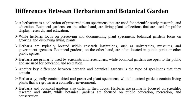Herbaria are typically located within research institutions such as universities, museums, and government agencies, while botanical gardens are often located in public parks or other public spaces. Herbaria are primarily used by scientists and researchers, while botanical gardens are open to the public for education and recreation. Herbaria typically contain dried and preserved plant specimens, while botanical gardens contain living plants grown in a controlled environment.